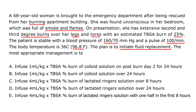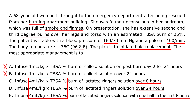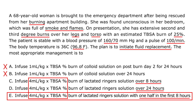They're asking which Parkland formula to apply. We know it's not choices A or B because the formula requires 4 mL per kg. That narrows it down to C, D, and E. We know the correct formula is present in those options. The key question is the timing: do you give it over 8 hours, over 24 hours, or give one half in the first 8 hours? The answer is E — give the first half in the first 8 hours and the second half in the next 16 hours.